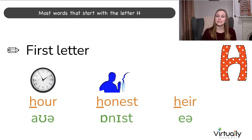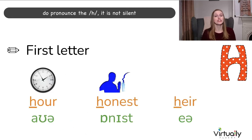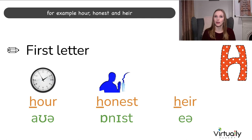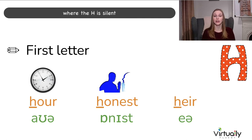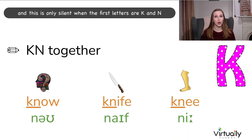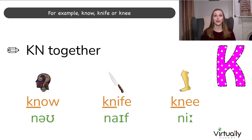Most words that start with the letter H do pronounce the H — it is not silent. There are a few words, though — for example: hour, honest, and heir, where the H is silent. Let's move on to the letter K. This is only silent when the first letters are K and N — for example: know, knife, or knee.